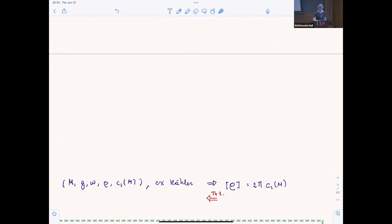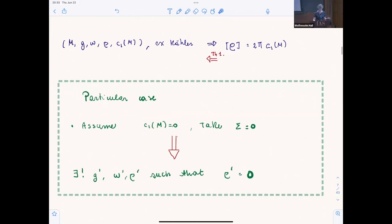The essence of the theorem is this: M is complex Kähler, rho is the Ricci form, C1 is the first Chern class. The theorem is well known that the Ricci form is in that particular class. The theorem essentially says, can we go the other way? A particular case is when C1 equals zero. The theorem says there is a unique Kähler metric which is Ricci flat.